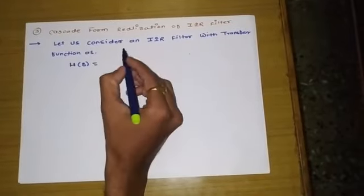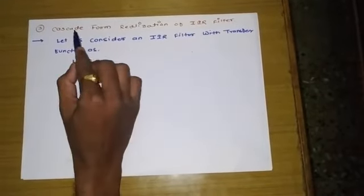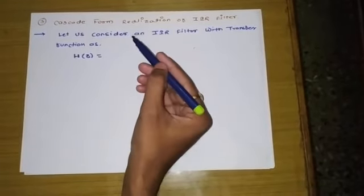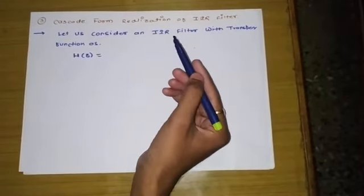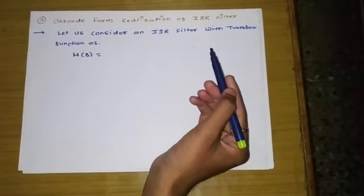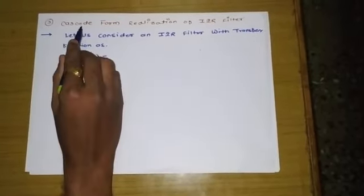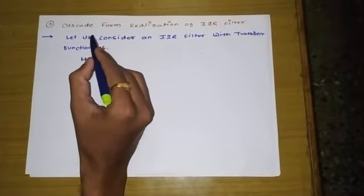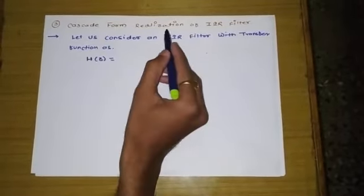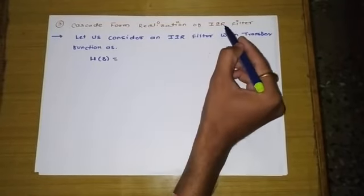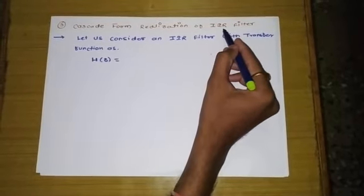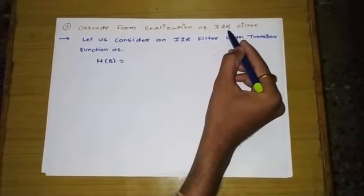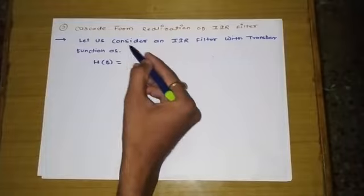In today's lecture we'll discuss cascade form realization of IIR filters. In previous lectures we covered direct form 1 and direct form 2 realization of IIR filters. Cascade form realization means several IIR systems are connected in cascade — that is, connected in series with each other.